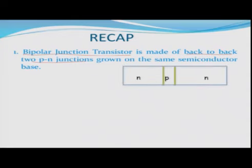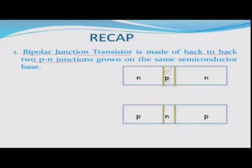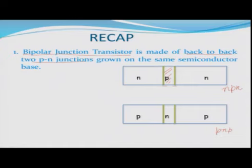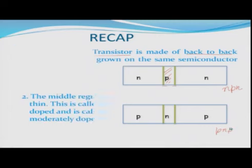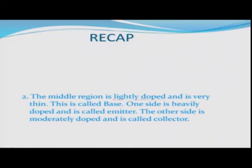You have a schematic drawing where you have a thin region in between and then these two junctions, and on the two sides you have another type of doping. You can have so-called NPN or PNP transistors. Everything is doped on the same semiconductor wafer by proper alloying or proper diffusion of dopants in right concentrations. The middle region is lightly doped — this is very important — and is very thin, also very important, and that is known as the base.